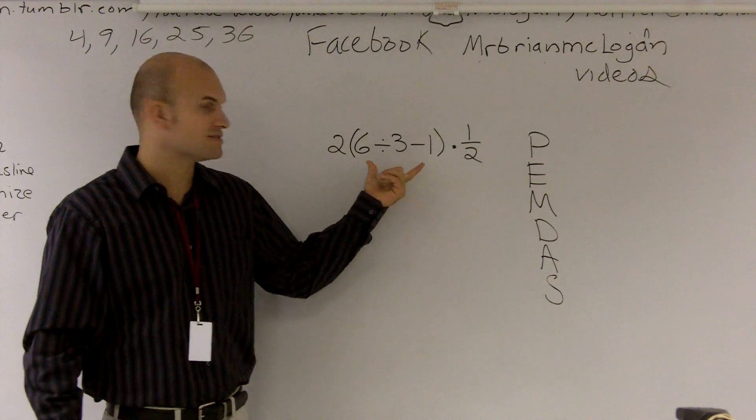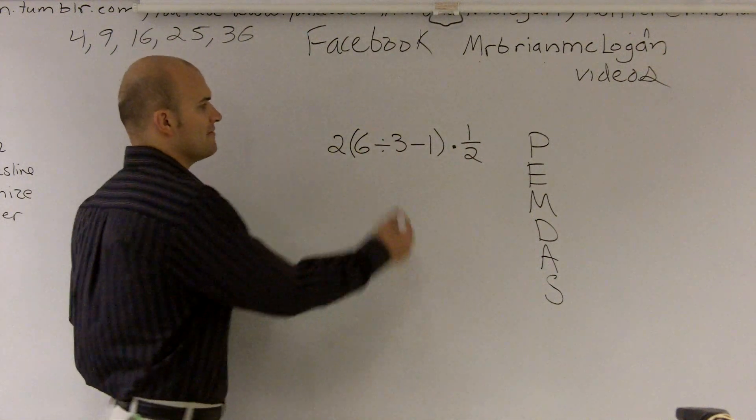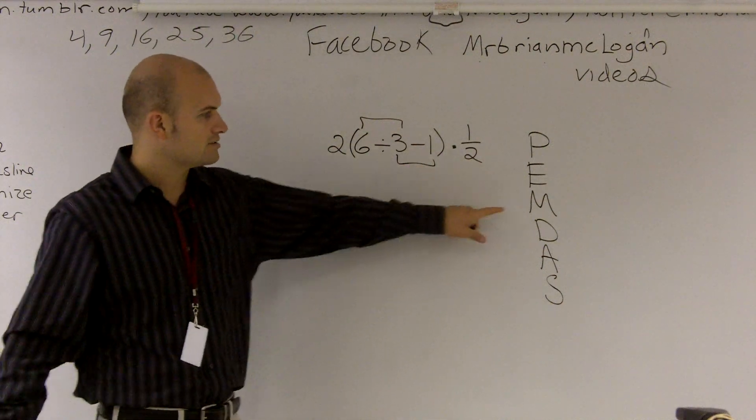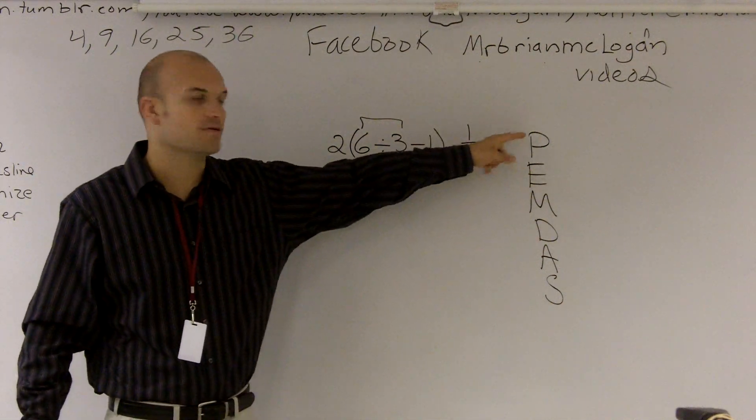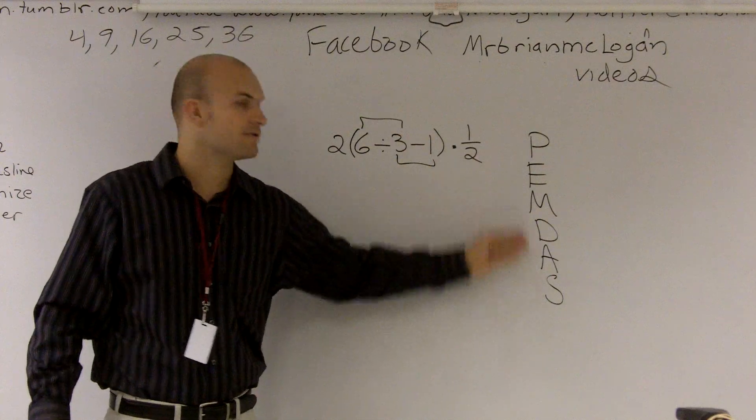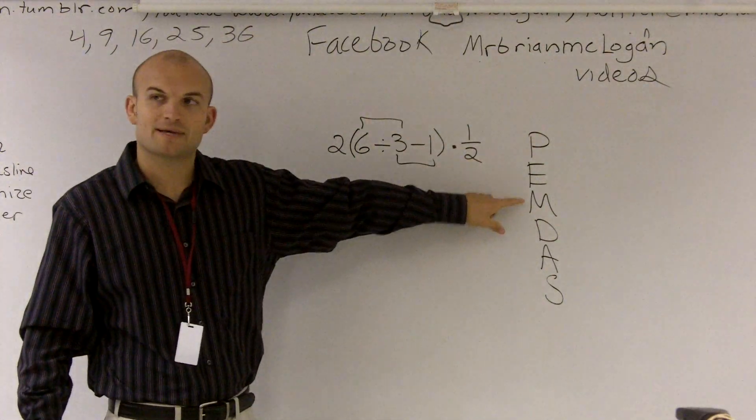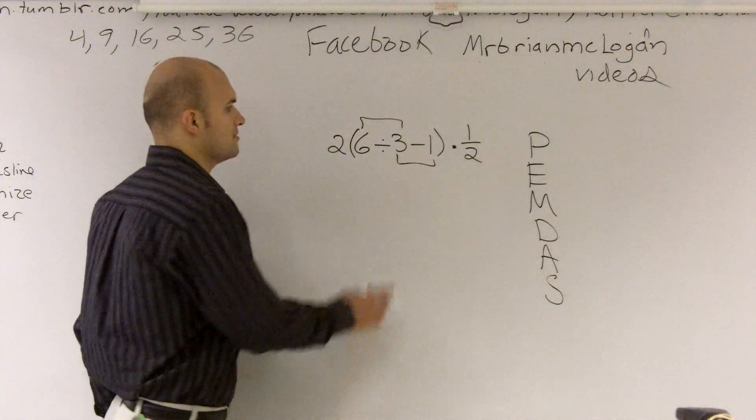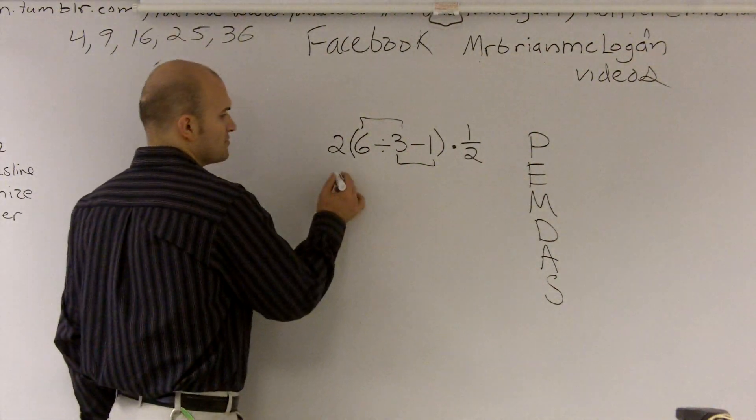When you look inside these parentheses, we have a multiplication problem and also a subtraction problem. We start with parentheses and then we go down. Since multiplication is going to come before subtraction, we're going to do that first. I'm sorry, division comes before subtraction.